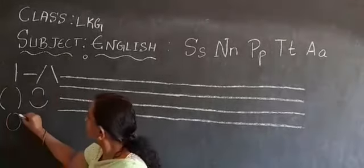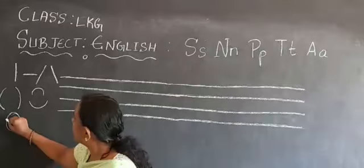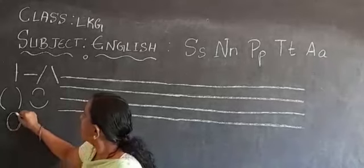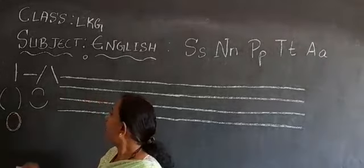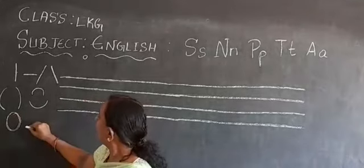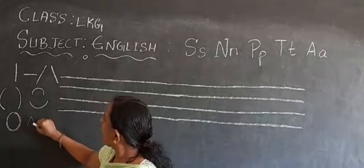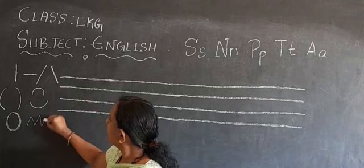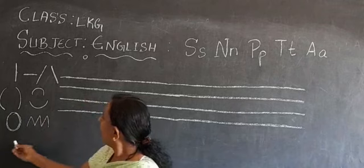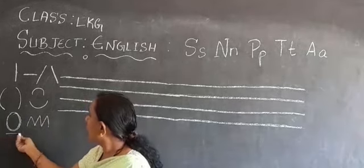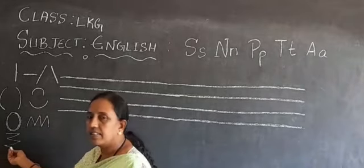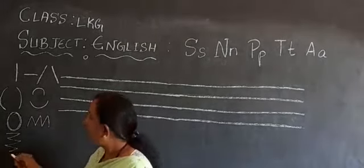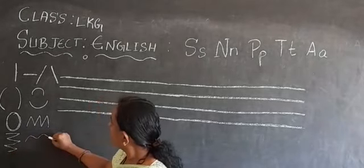What is this? This is a circle. And one more — zig-zag, like this, or like this. Zig-zag. And curve.